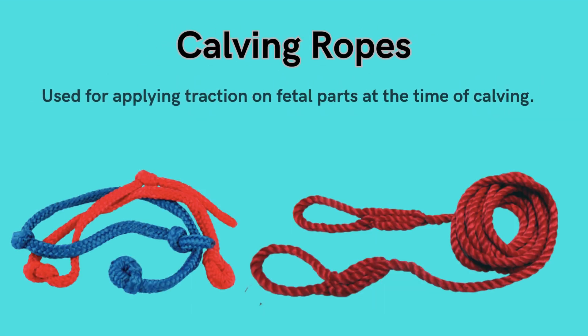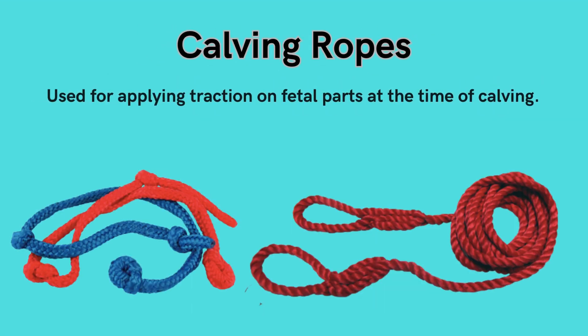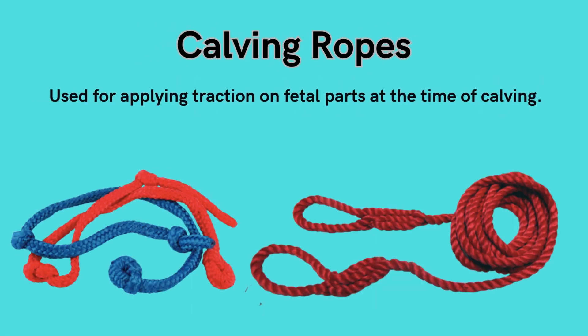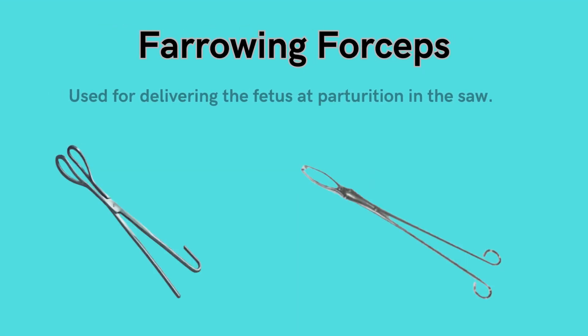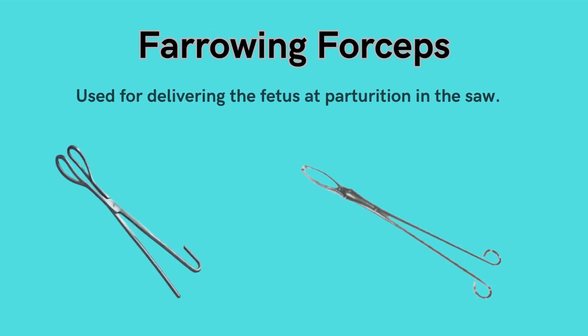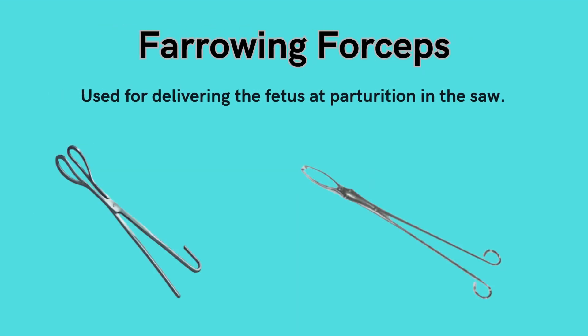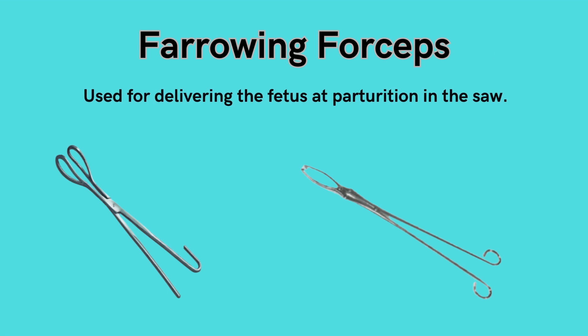Calving rope: used for applying traction on fetal parts at the time of calving. Farrowing forceps, ordinary type: used for delivering the fetus at parturition in the sow.